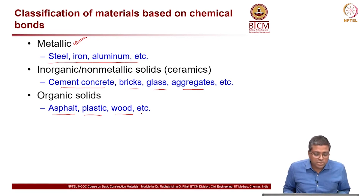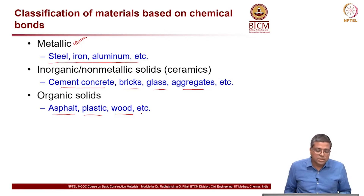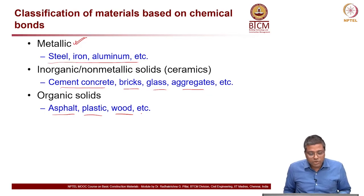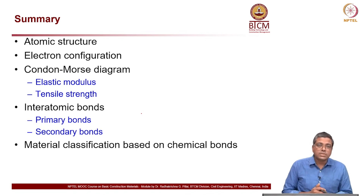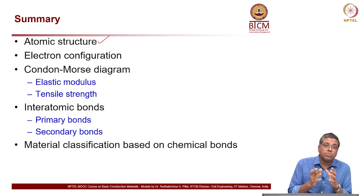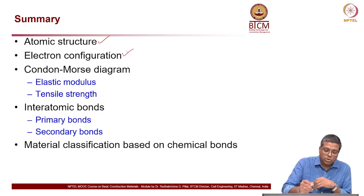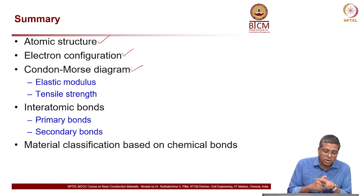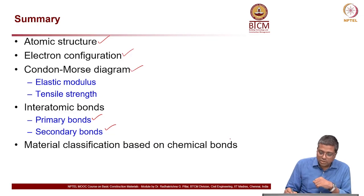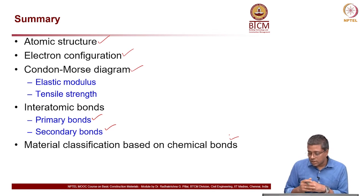In the next lectures, we are going to first look at how metallic materials behave and look at their microstructure with different types of defects. Then we will look at inorganic and non-metallic materials, and finally how organic materials behave. To summarize today: we looked at atomic structure, electron configuration — important to recap that knowledge — and then the content modes diagram and how it relates to mechanical behavior like elastic modulus and tensile strength. We also discussed different types of bonds and material classification based on chemical bonds, which we will cover in more detail in coming lectures. Thank you.